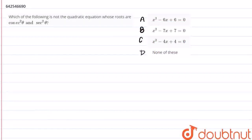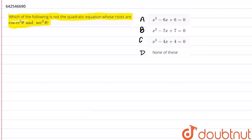Hello everyone. So the question for today is to find which of the following is not the quadratic equation whose roots are cosec²θ and sec²θ.